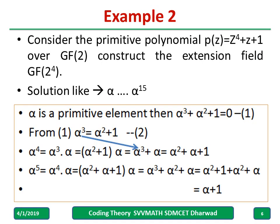Similarly, let us take another example. The polynomial given is x raised to 4 plus x plus 1. We have to consider the extension field for Galois field 2 raised to 4. For 2 raised to 3, we got elements up to 7. Now, 2 raised to 4 means we are going to get up to 15. Follow the same procedure — pause the video here, try it yourself, then compare what you have done with the video.